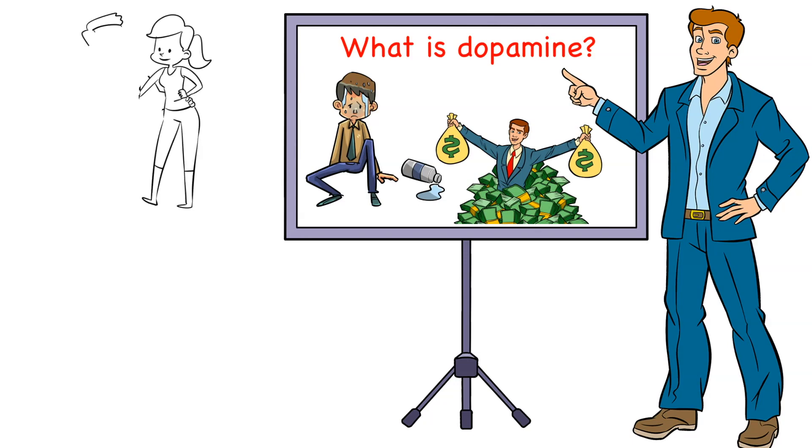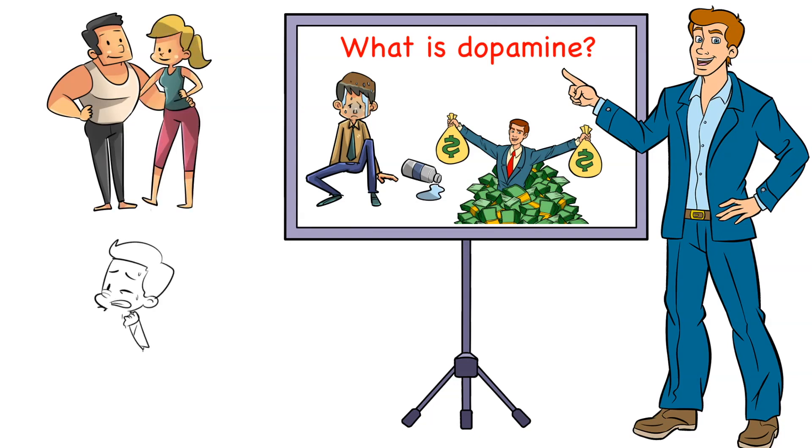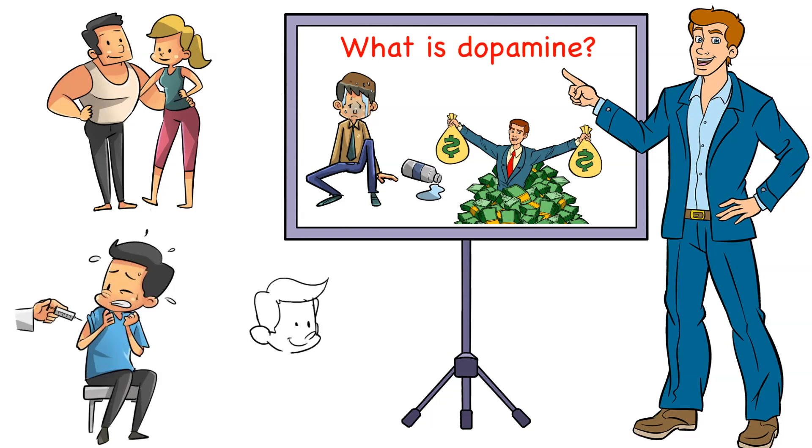Dopamine is the reason behind why people earn millions of dollars, have awesome relationships, and are in perfect health. Yet, at the same time, it's the reason why people end up injecting heroin and ruining the rest of their lives. So, in hopes of helping you completely understand dopamine so you can use it in your favor, let's begin.